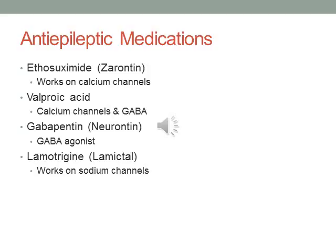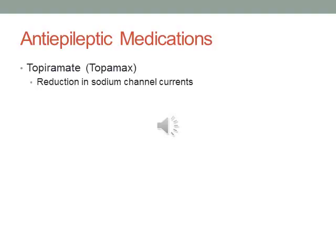Gabapentin is a GABA agonist typically used with other medications for difficult-to-treat epilepsy. In many other cases, gabapentin is used for treating migraines and other types of chronic pain, particularly nerve-based pain. Lamotrigine also works on the sodium channels similar to some of the other drugs. Topiramate, brand name Topamax, is another anti-epileptic medication that works primarily on sodium channel currents. It is often indicated as a second agent for people with partial seizures who don't respond to initial treatment.